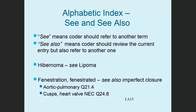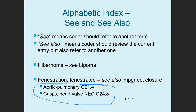Like many indexes, the alphabetic index uses the terms 'see' and 'see also.' 'See' refers you to another term. 'See also' means there are some possible codes here, but you might want to look elsewhere too. For example, hypernomia says 'see lymphoma.' For fenestration, it says 'see also imperfect closure' — those codes may work, but if they don't sound right, look at imperfect closure, which may have what you need.